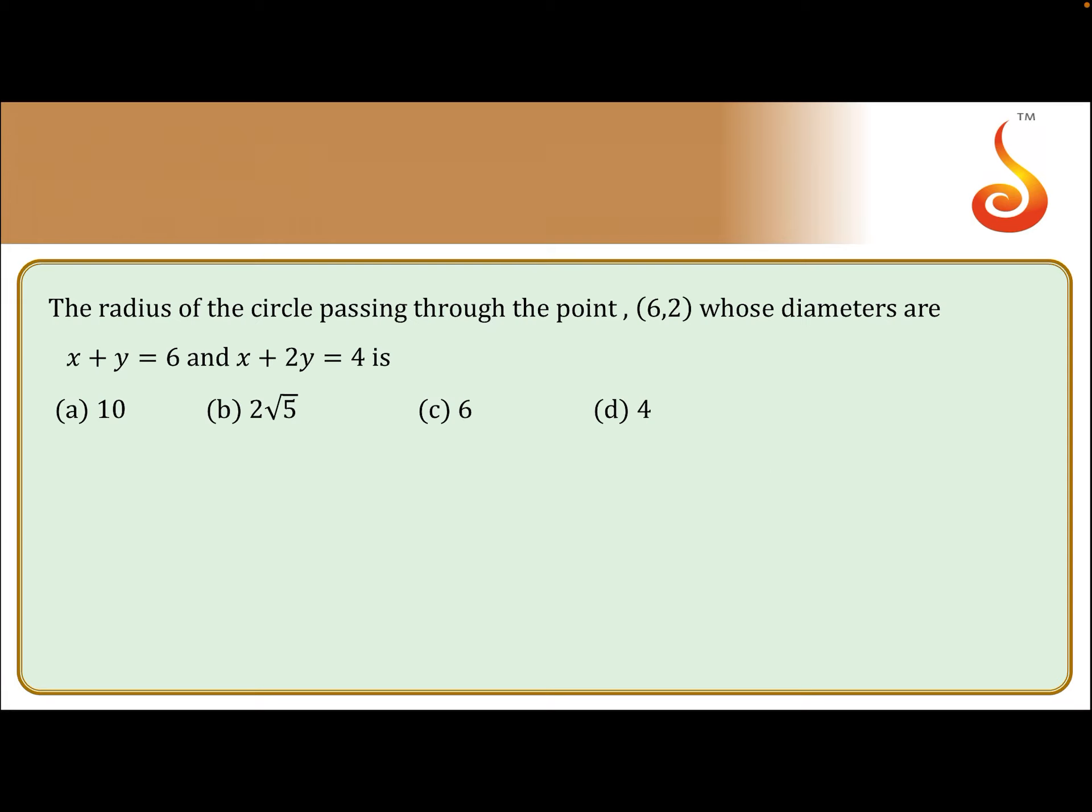Consider a circle passing through the point A(6,2) with equations of two diameters: one diameter is x+y=6 and the second diameter is x+2y=4. Both these diameters intersect at center C.